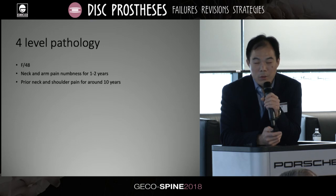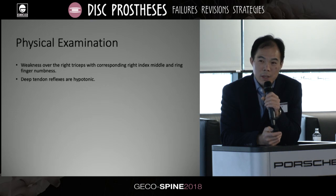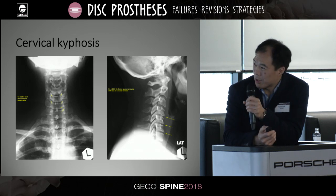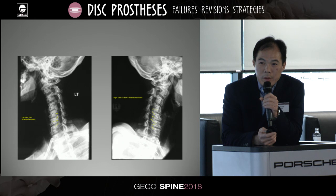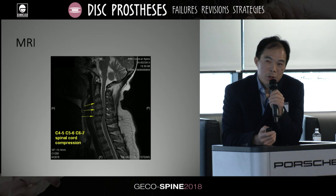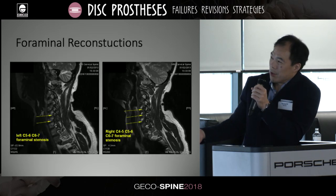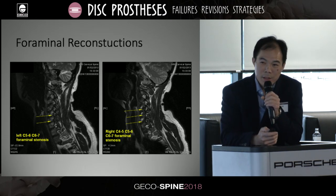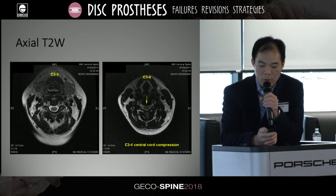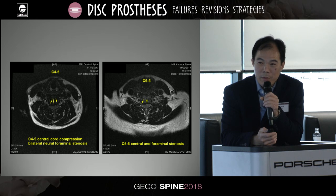This is a 48-year-old with neck and arm pain for one to two years and shoulder pain for around 10 years, developing motor weakness over the triceps and numbness over the middle and index fingers — a C7 problem. Her neck is in kyphosis, so a posterior approach is out, and she has multiple-level spondylosis. The MRI shows three-level cord compression. Four-level pathology was identified from C3-4 down to C6-7, with foraminal stenosis on the left side as well.